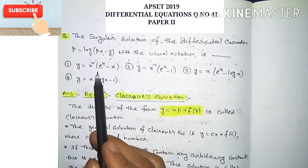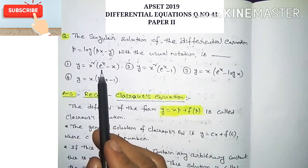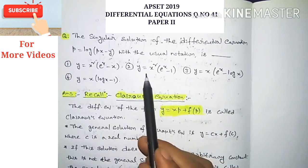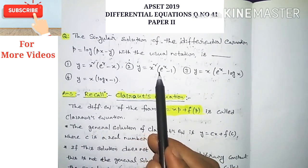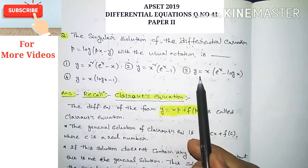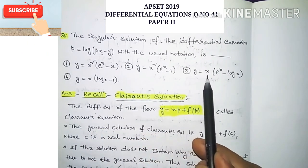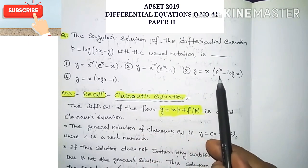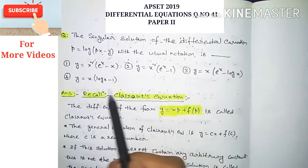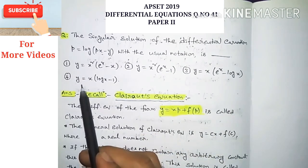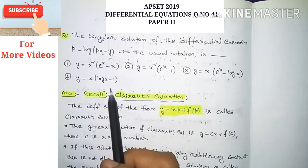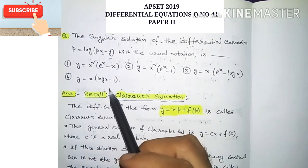Option one: y is equal to x² · e^x minus x. Option two: y is equal to x² · e^x minus 1. Option three: y is equal to x · e^x minus log x. Option four: y is equal to x · (log x minus 1). We have to choose one correct option from these four.